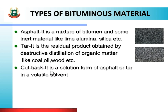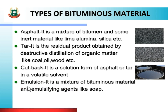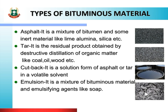Next bituminous material is cut back. It is a solution form of asphalt or tar in a volatile solvent. As you can see in the figure, this is the type of bituminous material called cut back. Asphalt or tar ko volatile solvent mein mix karne ke baad cut back solution banaate hain. Next is emulsion — a liquid solution. It is a mixture of bituminous material and emulsifying agents. Bituminous material ko emulsifying material mein mix karne ke baad jo liquid form milta hai, use emulsion kehte hain. These are the various types of bituminous material.